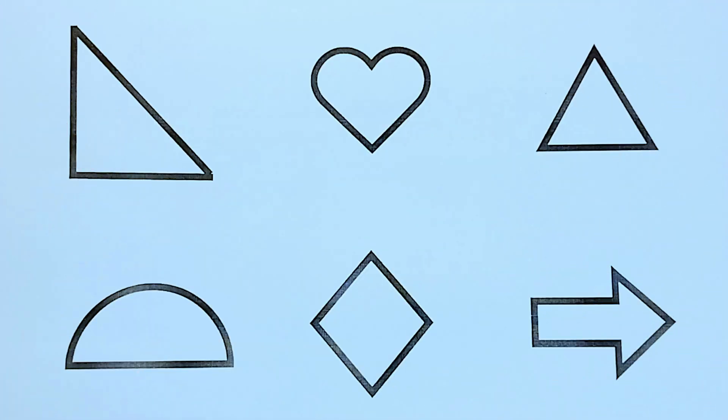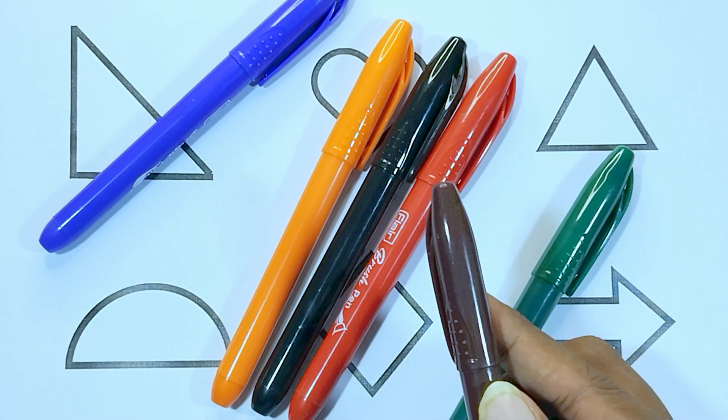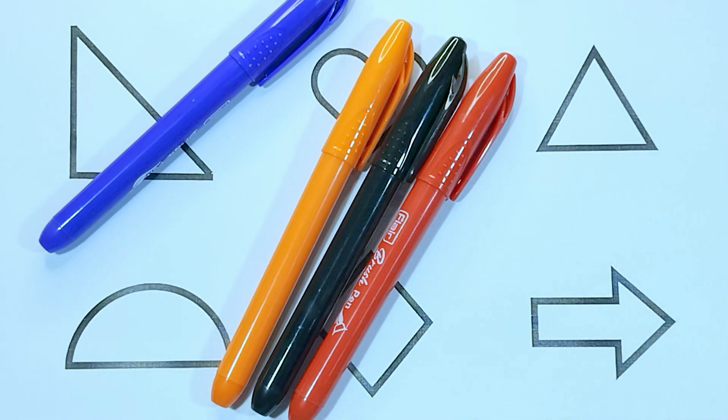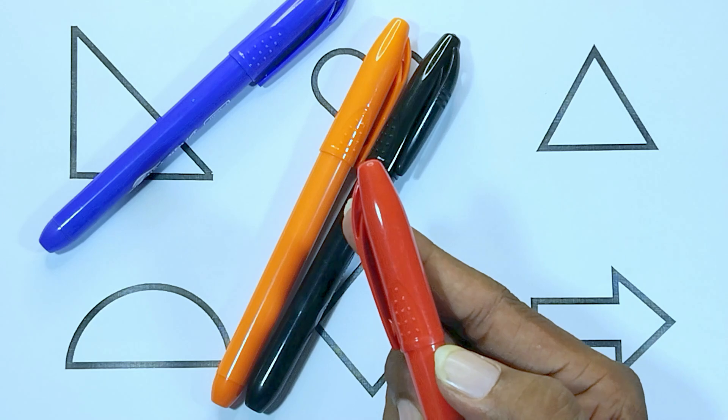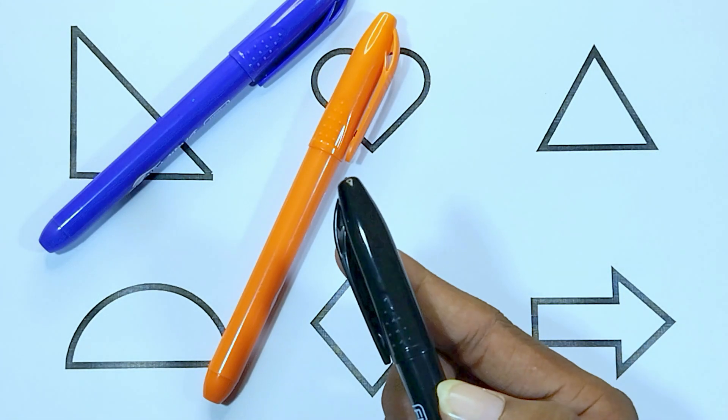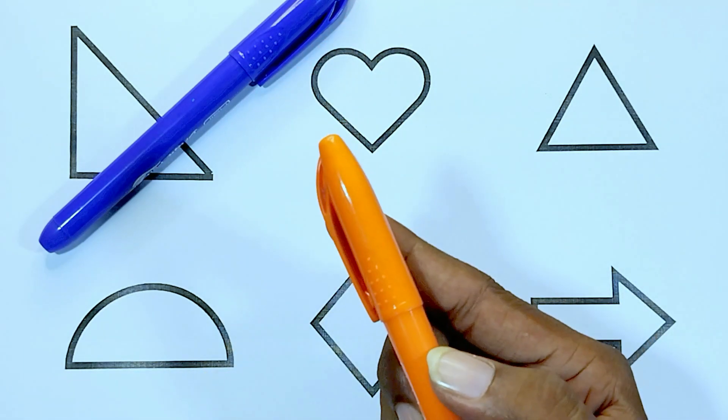Today we are going to learn about some shapes and colors. The colors are brown color, green color, red color, black color, and orange color.